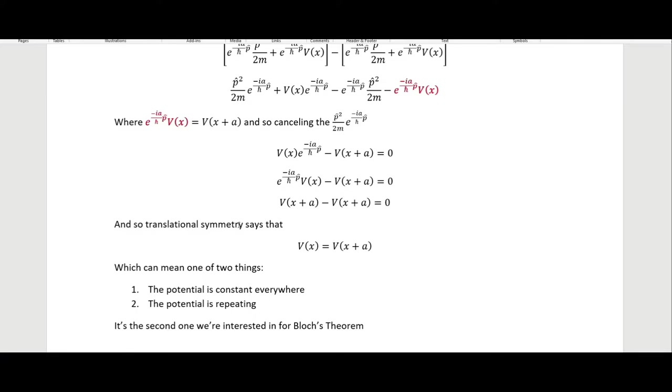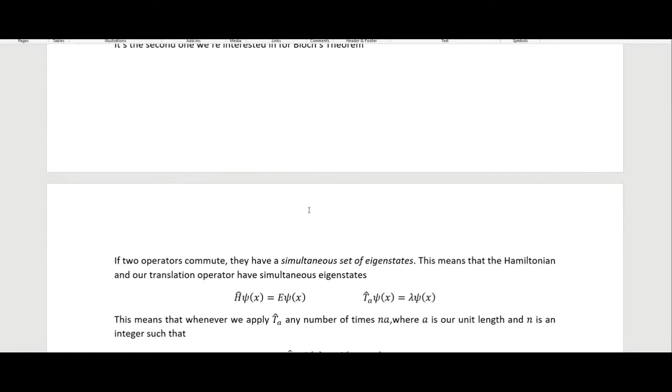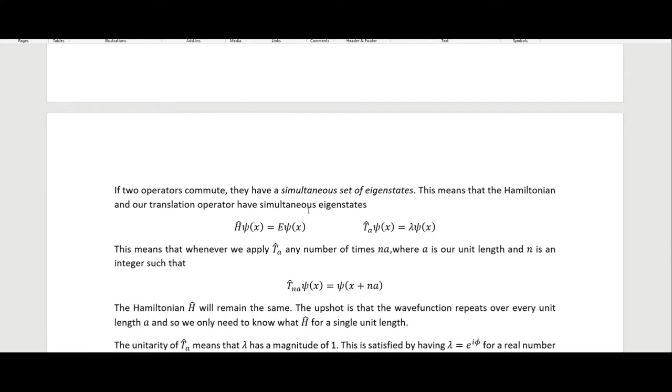This can mean one of two things: either the potential is constant everywhere — we could move by any infinitesimal amount and it works — or the potential is repeating, meaning A has to be multiplied by some integer. It's the second case we're interested in for Bloch's theorem, because we're interested in a repeating potential, as we'll see in the next video.